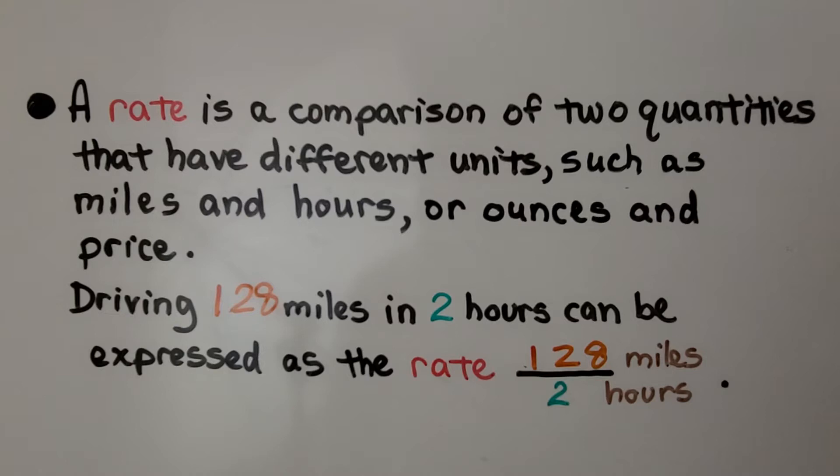Those are different units. Driving 128 miles in two hours can be expressed as the rate 128 over 2. We write the 128 as the numerator and the two hours as the denominator.